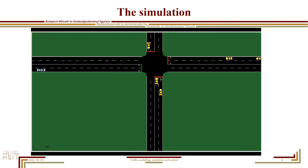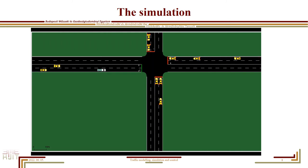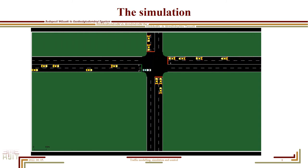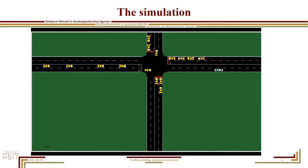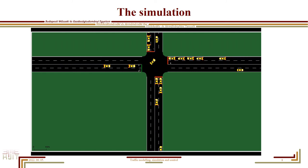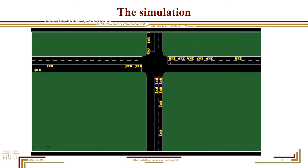There we can see the first emergency vehicle on the left. Now it has left the intersection and the default light program runs again.